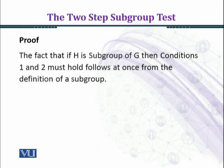We shall prove this theorem in two steps. In the first step, we assume that H is a subgroup of G and prove conditions one and two. In the second step, we prove the converse — we assume that conditions one and two hold and show that H is a subgroup of G.